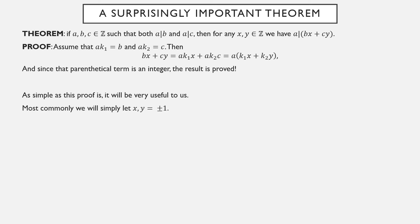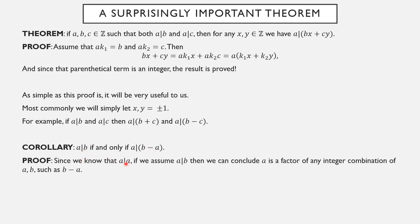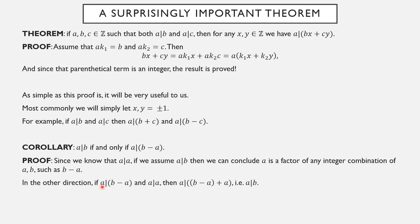Most commonly we'll let one of those two integers be 1 or −1. So if a is a factor of both b and c, it's a factor of b + c (x = y = 1) and also a factor of b − c (x = 1, y = −1). There's an interesting corollary: a is a factor of b if and only if a is a factor of b − a. Since a is a factor of itself, if a|b then a|(b − a) by the linear combination result, and conversely if a|(b − a) then a|(b − a + a) = a|b.